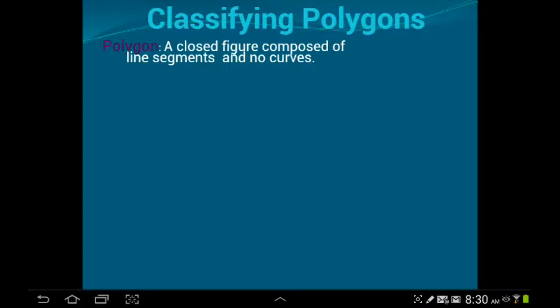To start things off here, we have the definition of a polygon. A polygon, pretty simple definition, is a closed figure, no opening, made up of or composed of line segments and no curves. There's no arcs of any sort. You cannot classify a circle, technically, as a polygon.